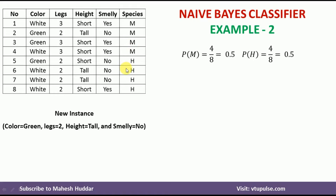First, I will calculate the prior probability — that is, the probability of M and the probability of H. There are four M examples out of eight, so the probability of M is 4/8. Similarly, there are four H examples, so the probability of H is 4/8. In both cases, the probability equals 0.5.